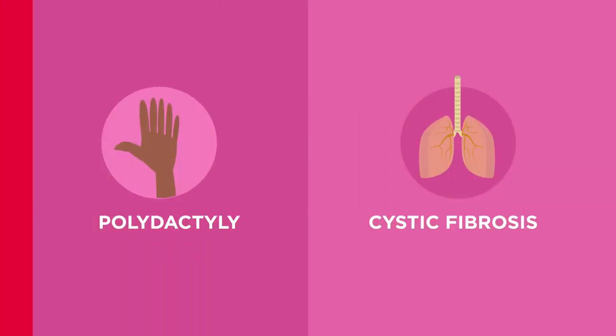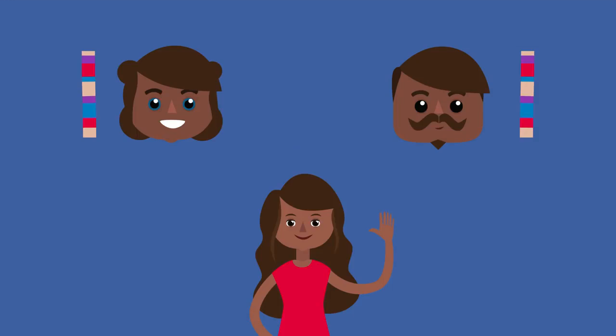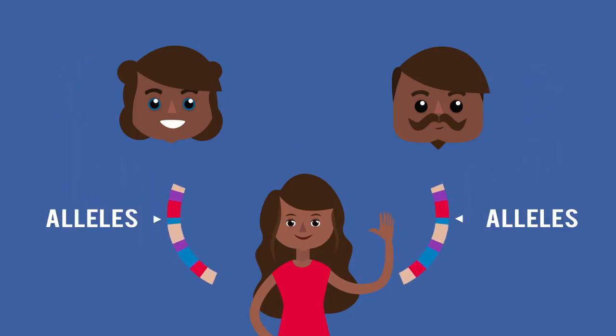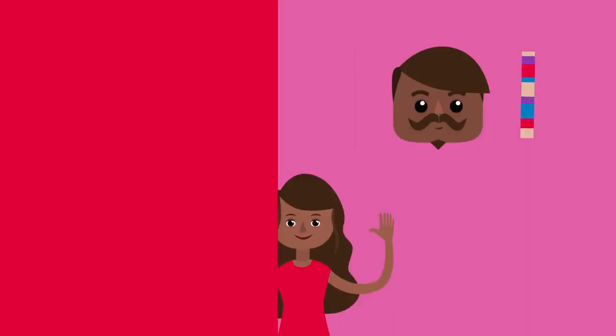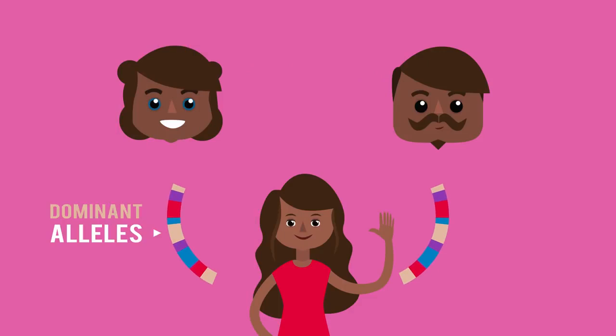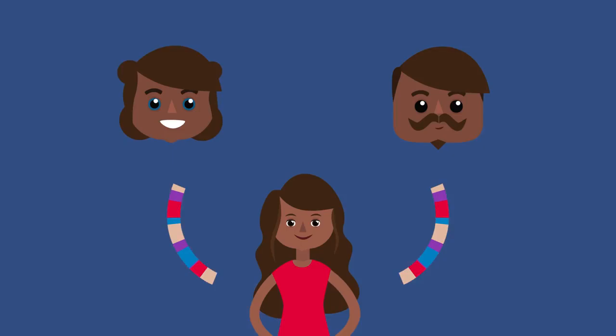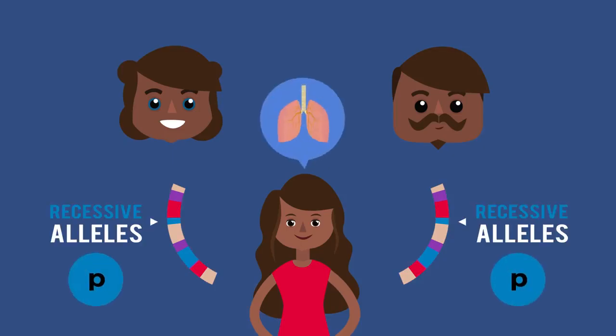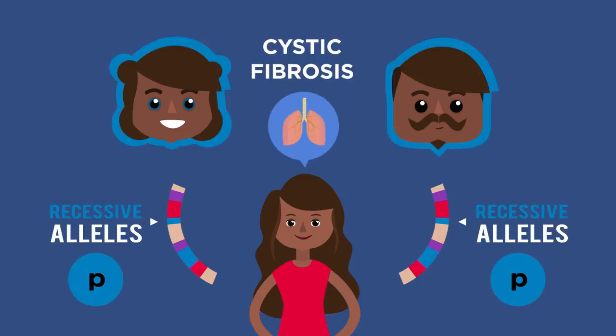So there we have a few examples of inherited genetic disorders. These are inherited from your parents resulting from certain alleles your parents have been carriers of. Sometimes genetic disorders are caused by dominant alleles like polydactyly, so it can be inherited from one parent. And others are caused by recessive alleles like cystic fibrosis, so both parents need to carry the allele.